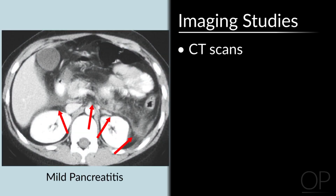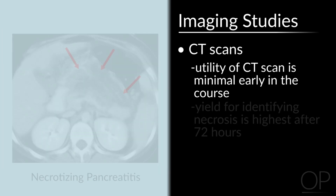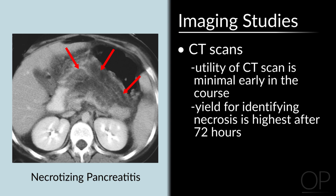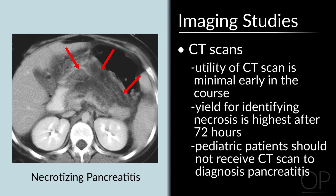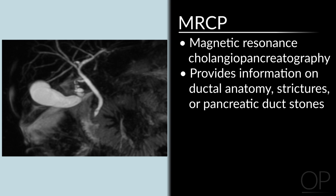CT scans can give you a sense of perfusion. It should be emphasized, however, that the utility of a CT scan is very minimal early on in the course, and the yield for identifying necrosis is highest after 72 hours. Pediatric patients should not routinely receive a CT scan to diagnose acute pancreatitis unless there is a concern for abdominal trauma. MRCP can also provide information on the ductal anatomy, strictures, or pancreatic duct stones. This is important in your patient with a known history of chronic pancreatitis, and is also most useful after the acute episode has subsided. It also offers the benefit of limiting radiation exposure.